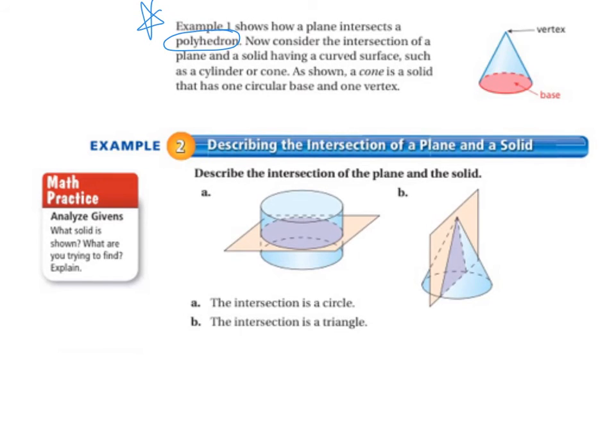And in letter B, the plane intersects from the vertex down to the base so the intersection is a triangle. So it's really important when you look at these to understand in which direction the plane is intersecting the solid.